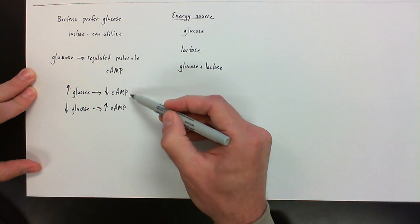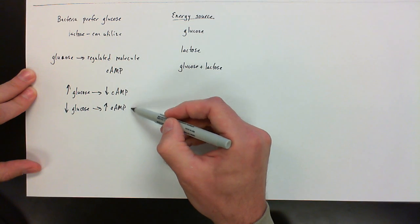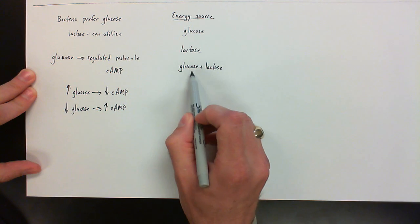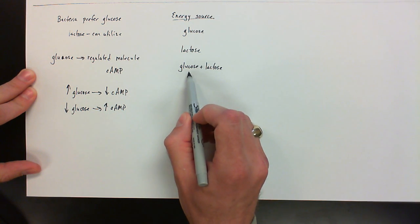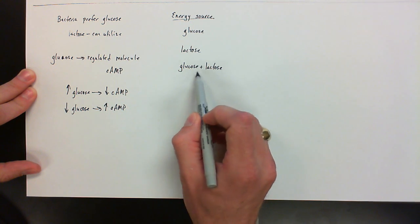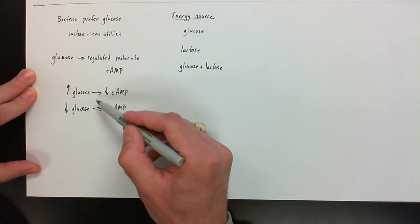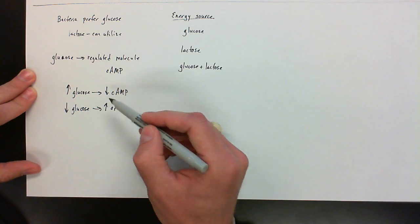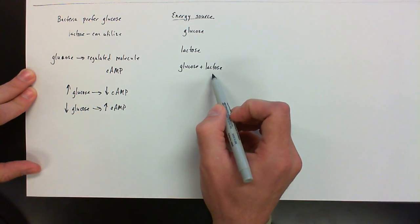So what we're going to see is this being utilized as kind of a signaling molecule. So this is one of the ways when we get into this scenario here that when glucose and lactose are both available, we're going to see that this molecule is going to be utilized to help turn off this lactose operon.